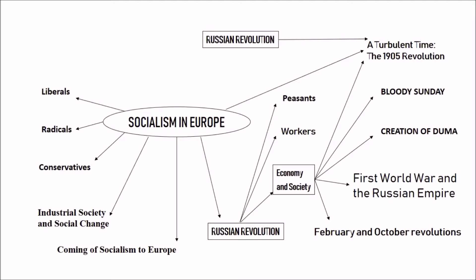In this chapter we will basically discuss about Liberals, Radicals, and Conservatives; the Industrial Society and Change; the Coming of Socialism to Europe; the Russian Revolution; Economy and Society; Workers and Peasants. Then we will move on to the February and October Revolution, First World War and Europe, Creation of Duma, Bloody Sunday, and the 1905 Revolution.